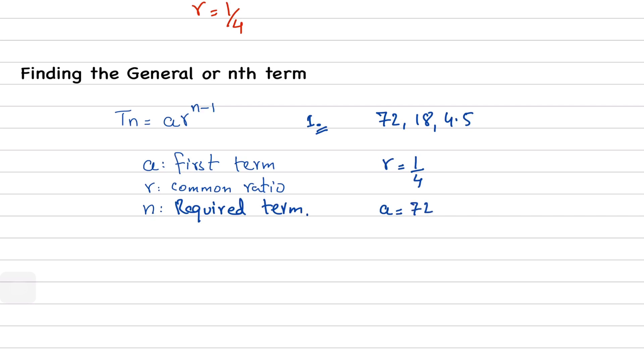So, if we want a general term, we will plug in values. So, this will be 72 times 1 over 4 raised to the power n minus 1.